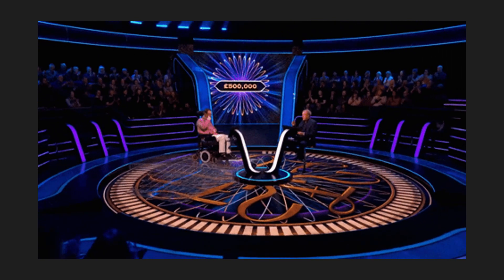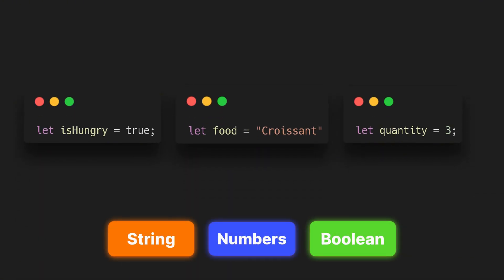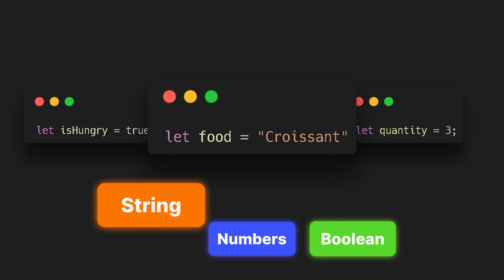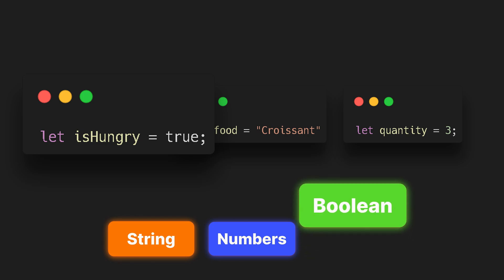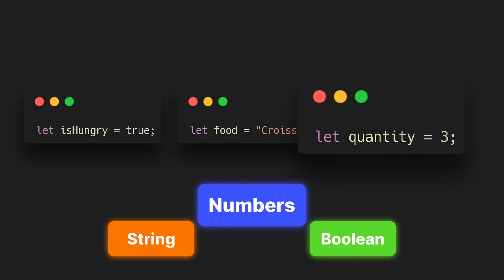Let's now recap what we've learned with a simple exercise. We have three variables with different data types. Can you guess what data type this is? If you guessed string, you're right — that's because we're using double quotation marks, which indicate that this variable holds a string value. Next, what about this one? If you guessed Boolean, you're correct — the Boolean type holds either true or false. And of course, the last one is a number, which doesn't use quotation marks.